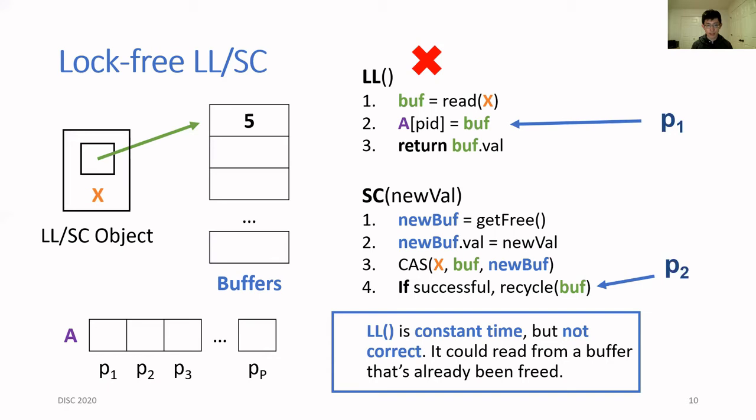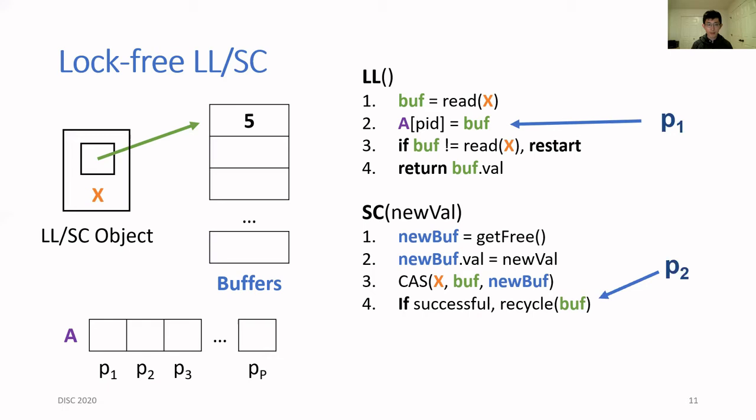The recycle operation scans the announcement array and sees that the buffer has not been announced, so it decides to free the buffer. Now process P1 wakes up and announces the buffer, but at this point it's too late. On line three, it ends up reading from a buffer that has already been freed.